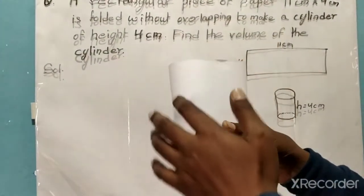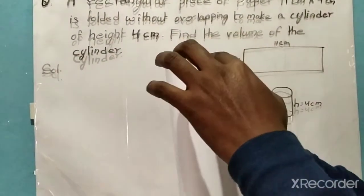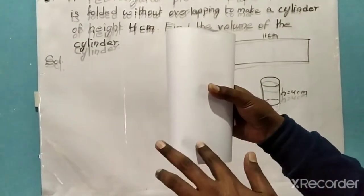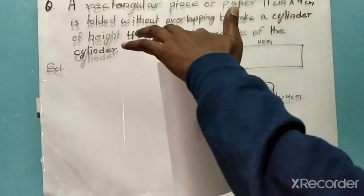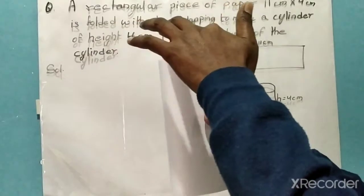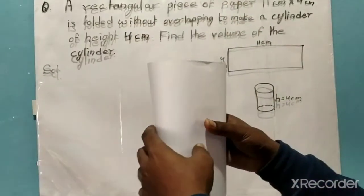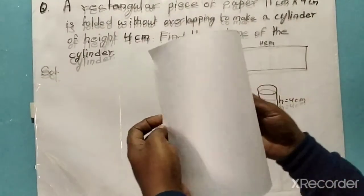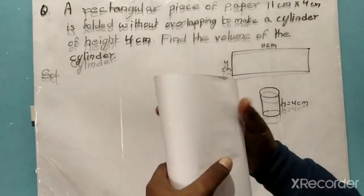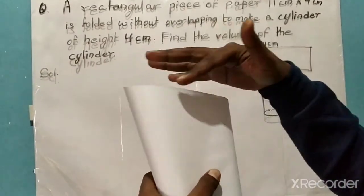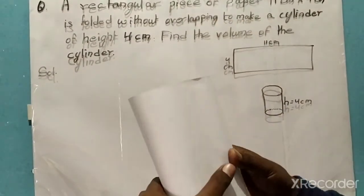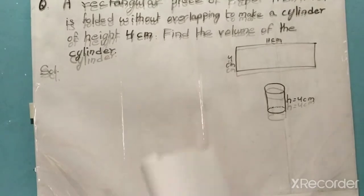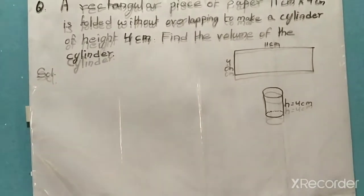We have to find the volume of this cylinder. The height will be 4 centimeter and the circumference is 11 centimeter, because this is the rectangular shape — when we fold it, this length becomes the circumference. So we have to find the volume of this cylinder.